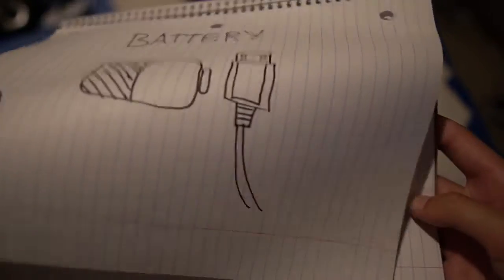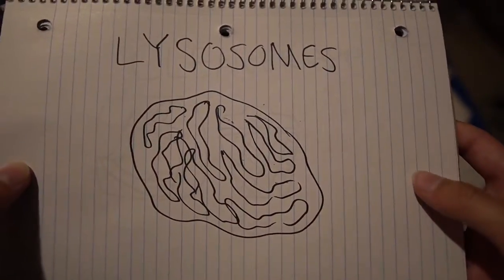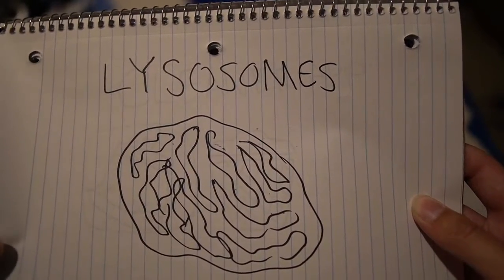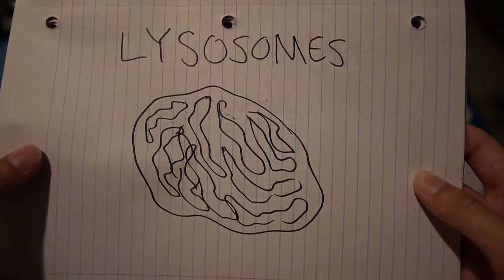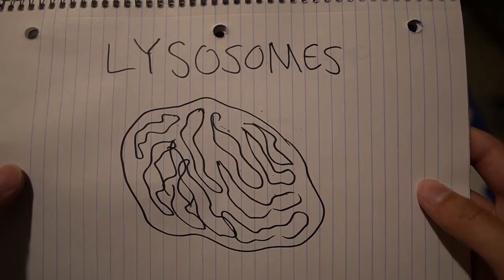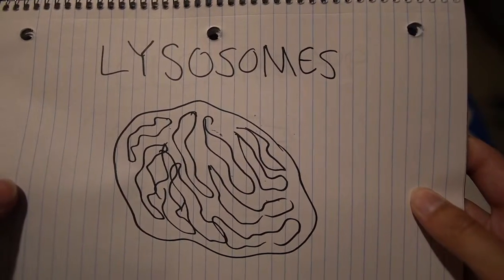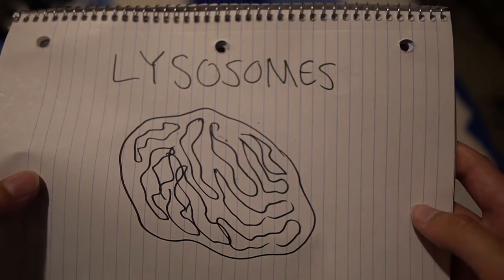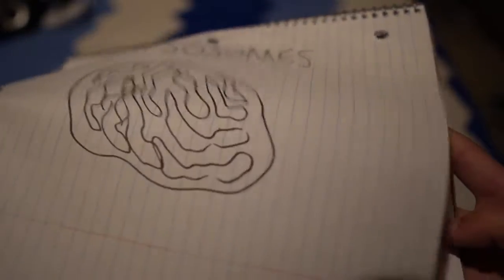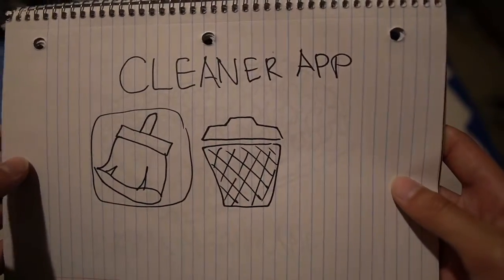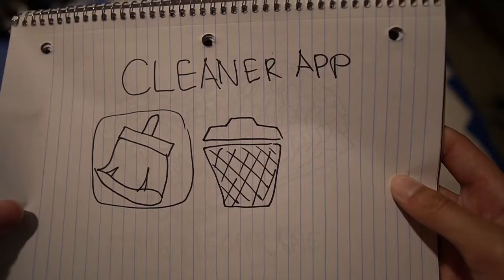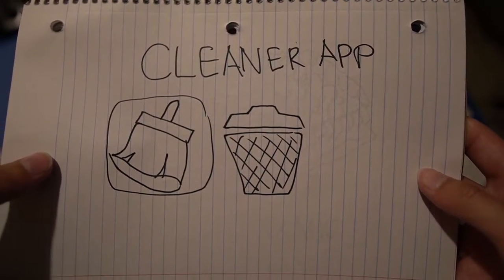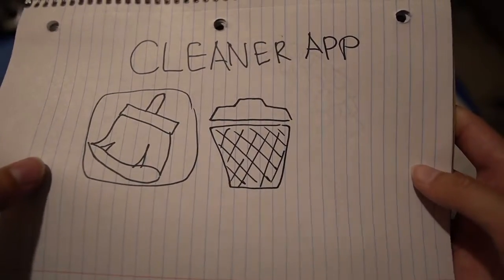We then move to a lysosome. A lysosome is a structure that contains digestive enzymes. These digestive enzymes are used to break down and destroy old or excess cell parts. They can also destroy invading bacteria in the cell, so lysosomes are really important in regulating the health and function of a cell. Lysosomes are kind of like a cleaner app on a phone — cleaner apps help to regulate the phone's functionality by removing apps or bloatware that are slowing down the phone, kind of like throwing it in a trash can.